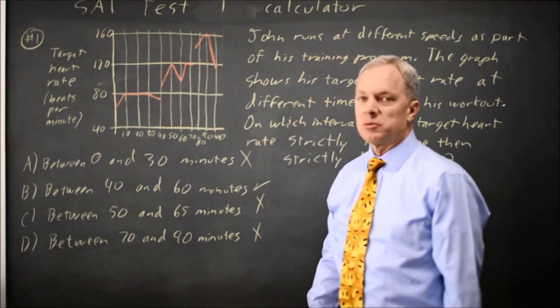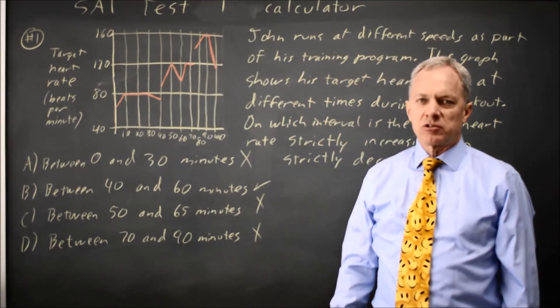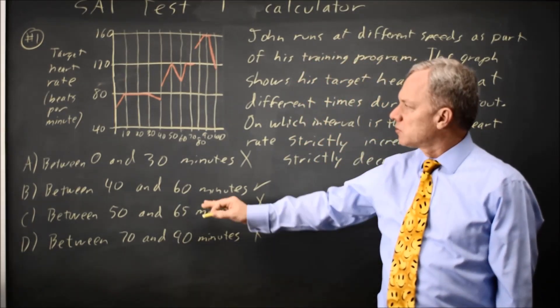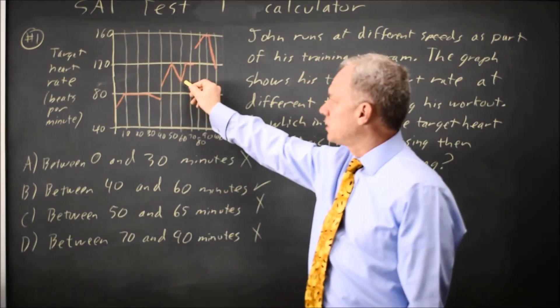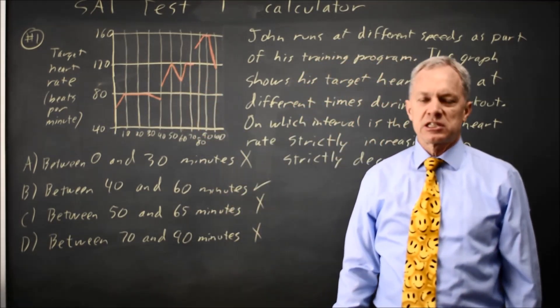The only choice that works would be choice B. The target heart rate is strictly increasing from time 40 to 50 in this graph and then strictly decreasing from time 50 to 60.